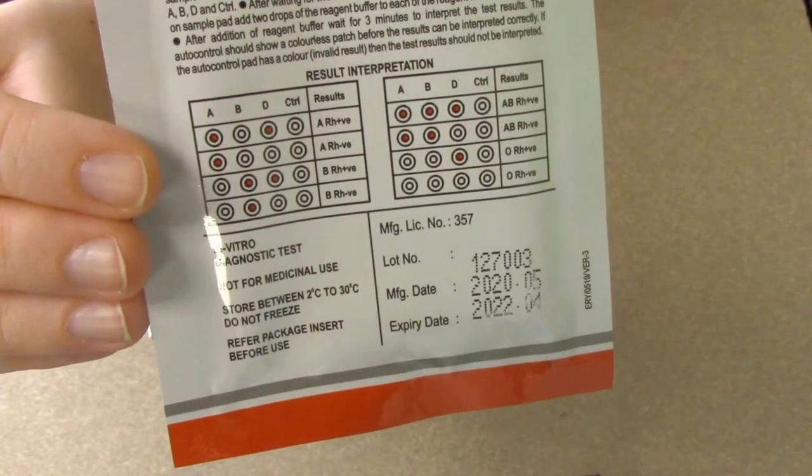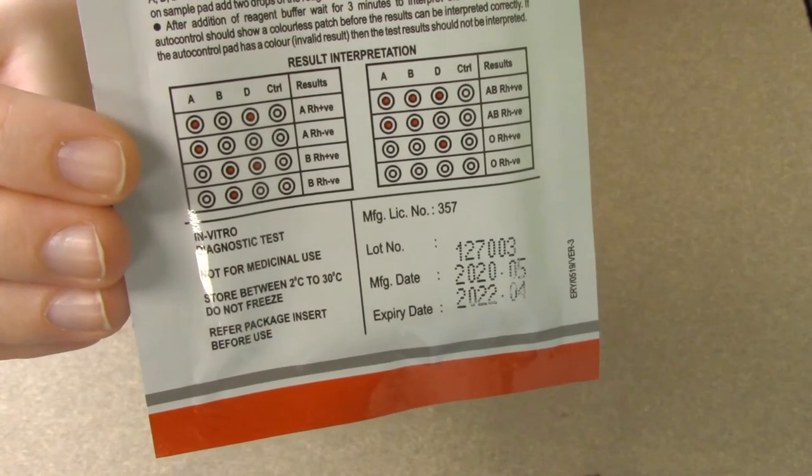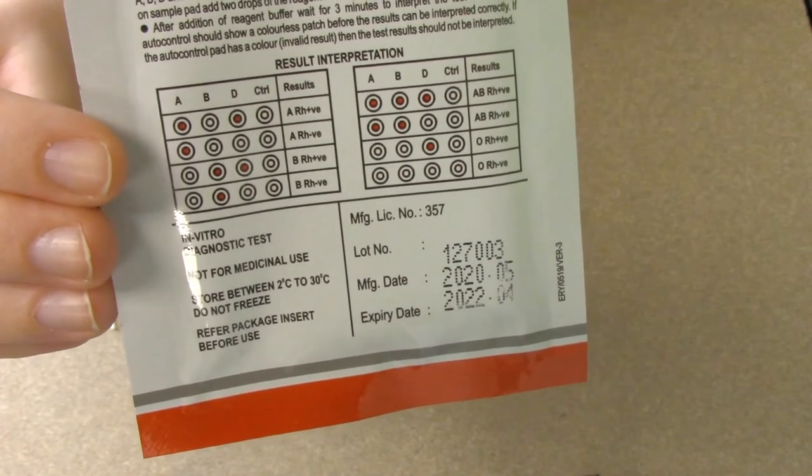For all of the other blood types, you can see what the wells would look like, which ones would remain red, which ones would become colorless.